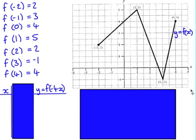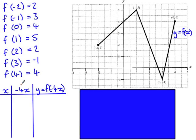Now we're going to see what happens when we transform the function in a couple of different ways. Firstly, if this is y equals f of x, what will y equals f of negative 4x look like? We're going to take some x values, multiply them by negative 4, and then apply the function. Starting with x equals 0: negative 4x is also 0, and f of 0 is 4, so the point 0, 4 is still on the transformed function.